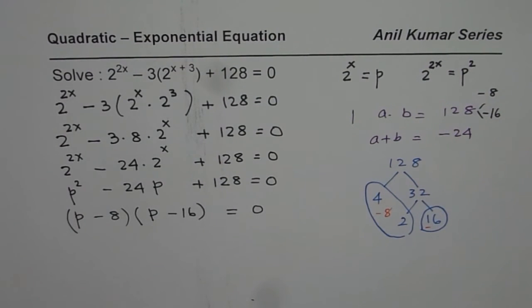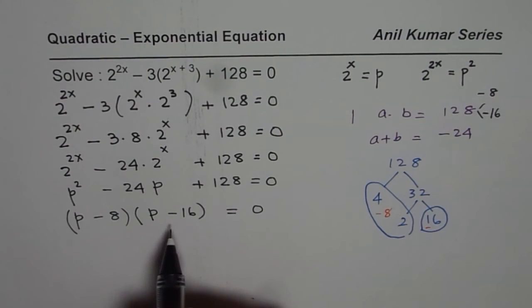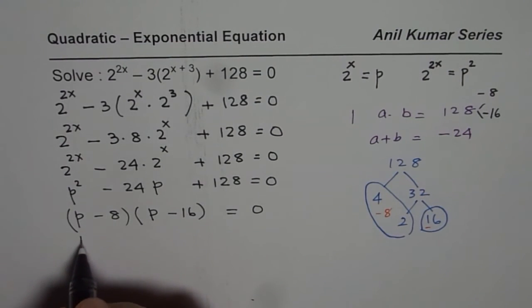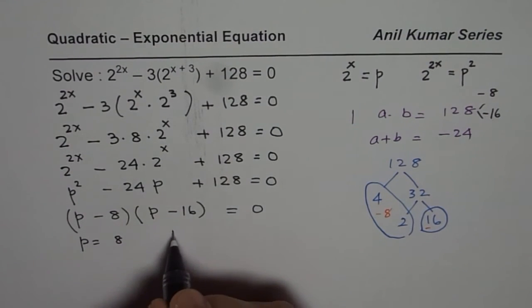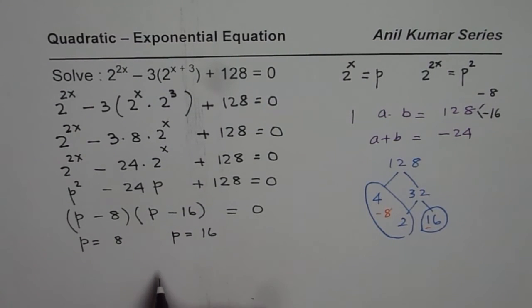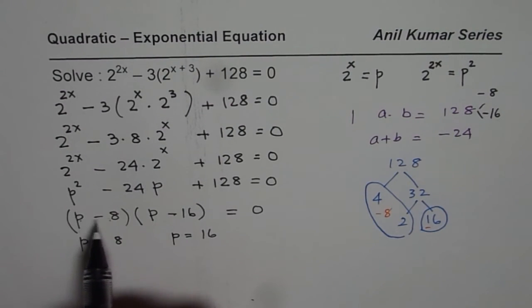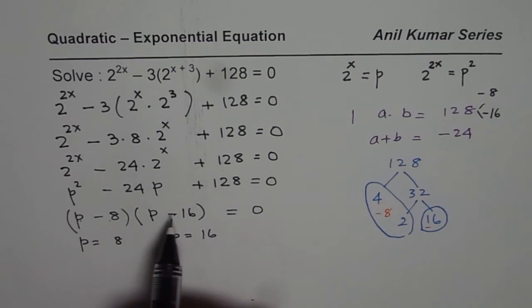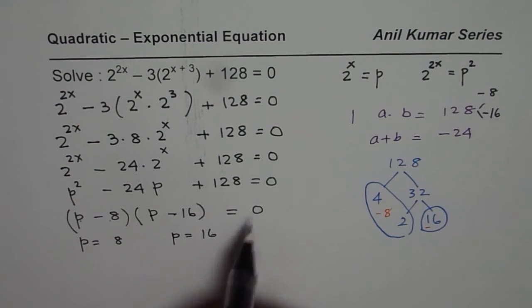Once you have this factor you know there are two solutions. One solution is p equals to 8. The other is p equals to 16. If I write p is 16 this is 0. 0 times anything is 0. Equation is satisfied. If I write 8, 8 minus 8 is 0. 0 times anything is 0. So the equation is again satisfied.